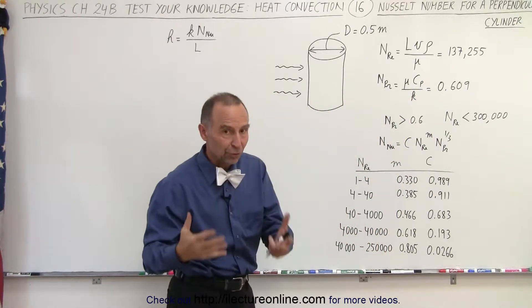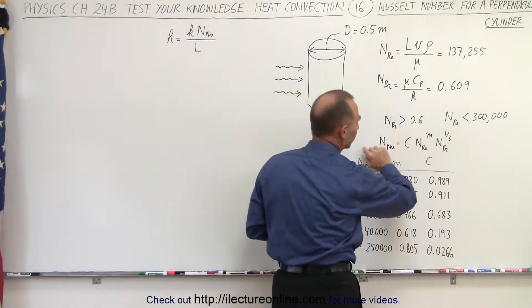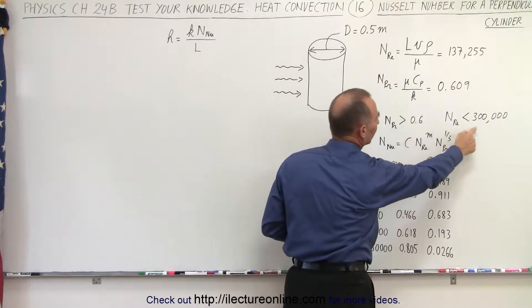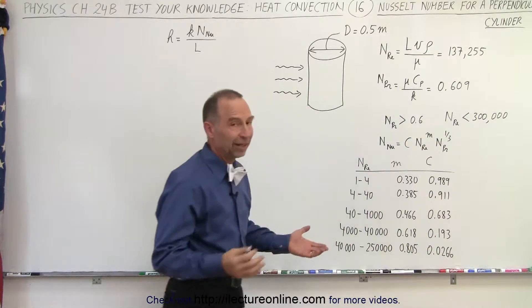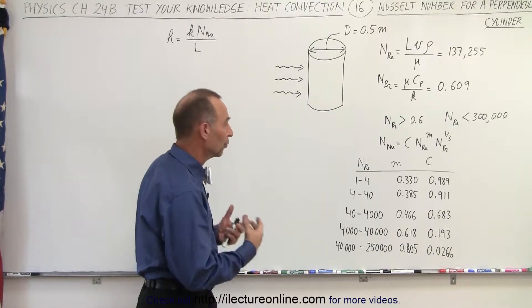So once we plug that in, and we've shown you how to do that on some previous videos, we must make sure that in order for this equation to be valid, we don't violate that the Prandtl number must be greater than 0.6, and the Reynolds number must be less than 300,000, or we need to use a different equation.